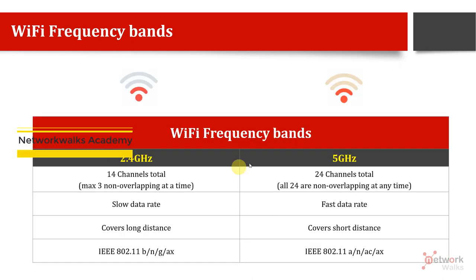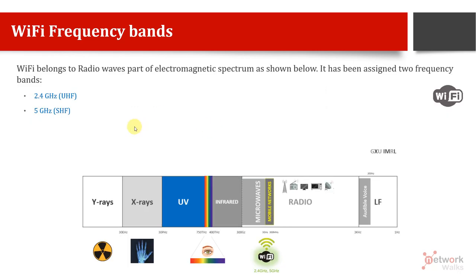We'll discuss 2.4 gigahertz and 5 gigahertz in detail in the next lectures. Every network engineer, IT engineer, and computer science engineer must understand the electromagnetic spectrum, especially the radio waves part — mobile networks, Wi-Fi, microwaves, television, satellite communication all belong here. To remember the spectrum, you can use the mnemonic GX UIMRL: G for gamma, X for X-rays, U for ultraviolet, I for infrared, and so on. In the next videos, we'll discuss these bands in detail.